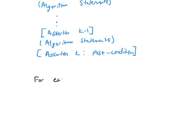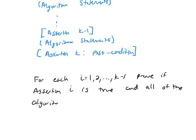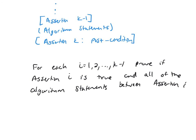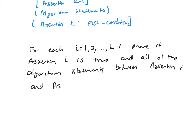For each i between 1 to K minus 1, prove if assertion i is true and all of the algorithm statements between assertion i and assertion i plus 1 are executed, then the next value, assertion i plus 1, is true.